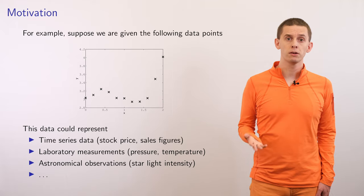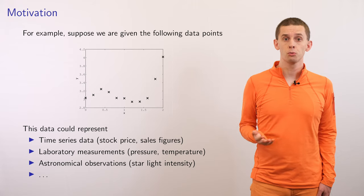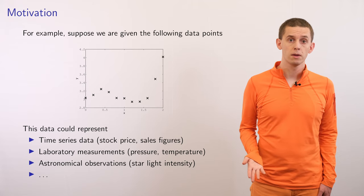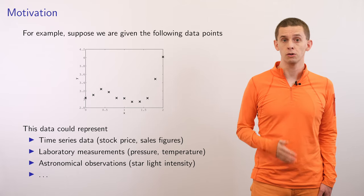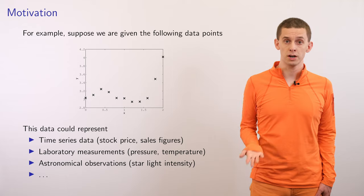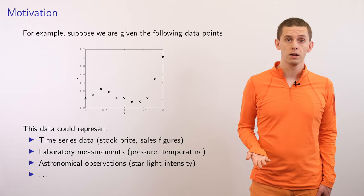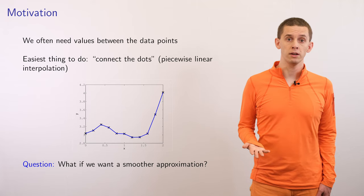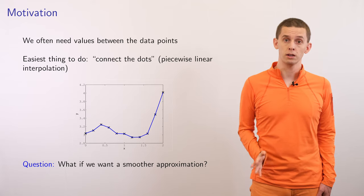Let's begin by looking at a simple example. Suppose we're given the following 11 data points. This could really represent many different things: time series data such as stock prices or sales figures, laboratory measurements such as pressure or temperature, or even astronomical observations. Often we might want to have a way to sample this data at points in between the given data points.